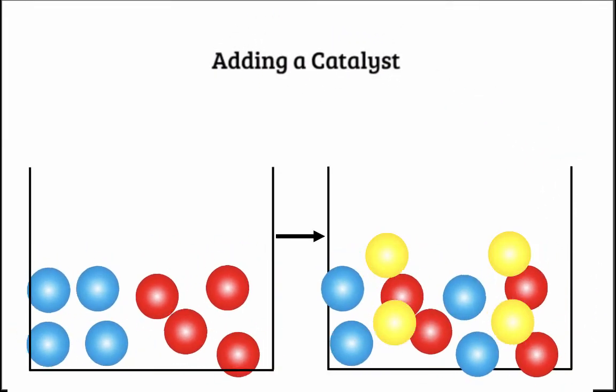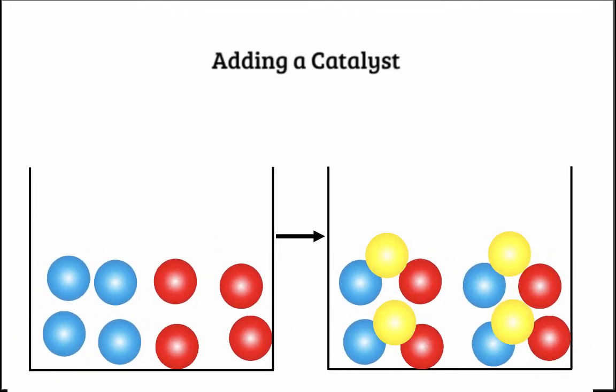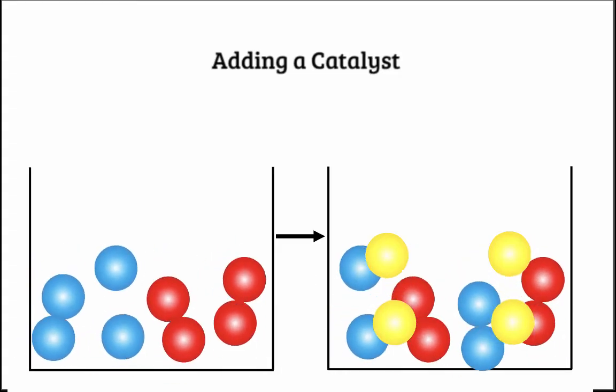The fourth way to speed up a chemical reaction is by adding a catalyst. A catalyst is a substance that helps speed up the rate of reaction without being used up in the reaction. There are two ways a catalyst can do this.